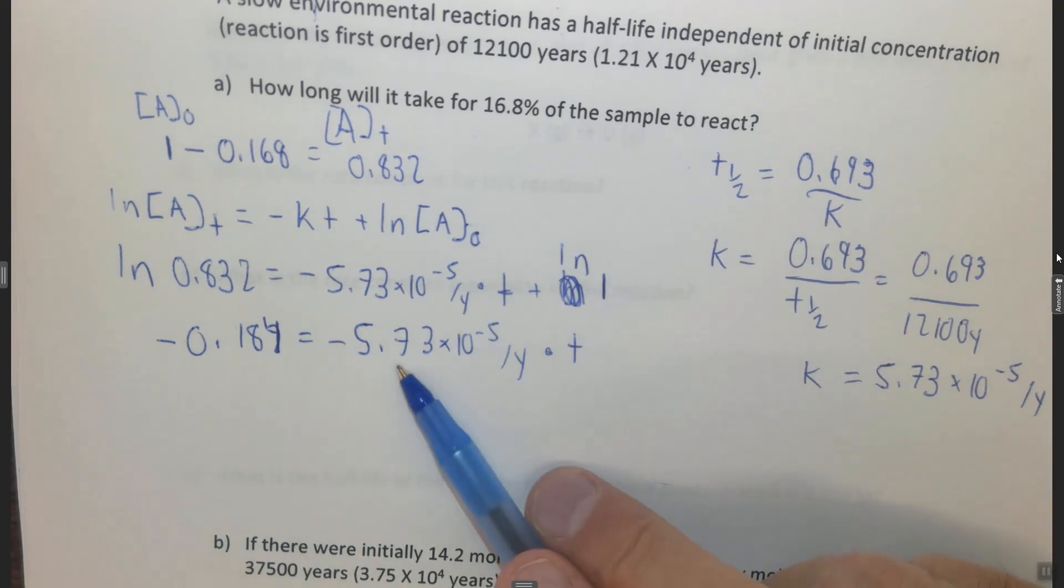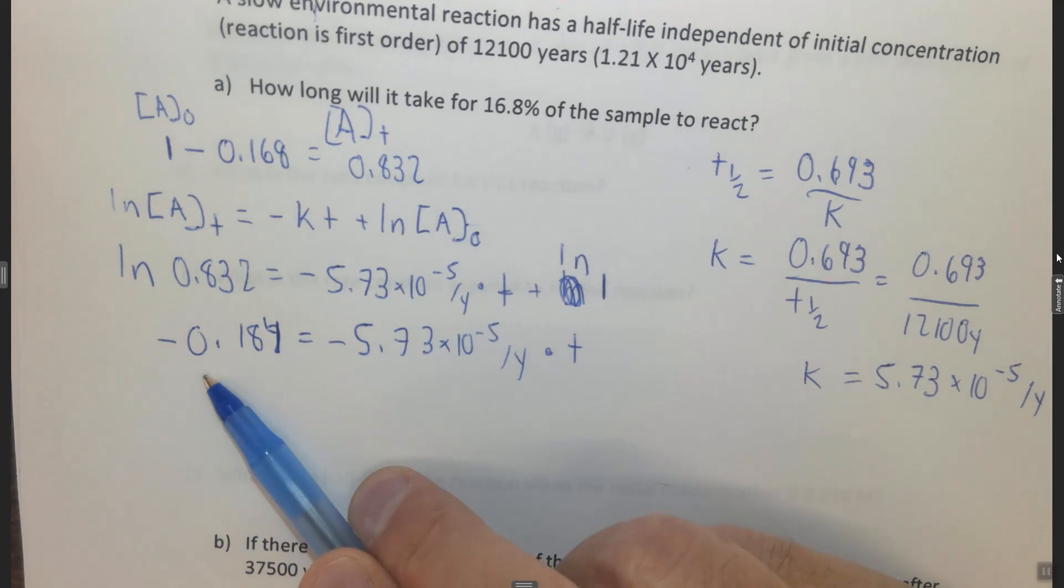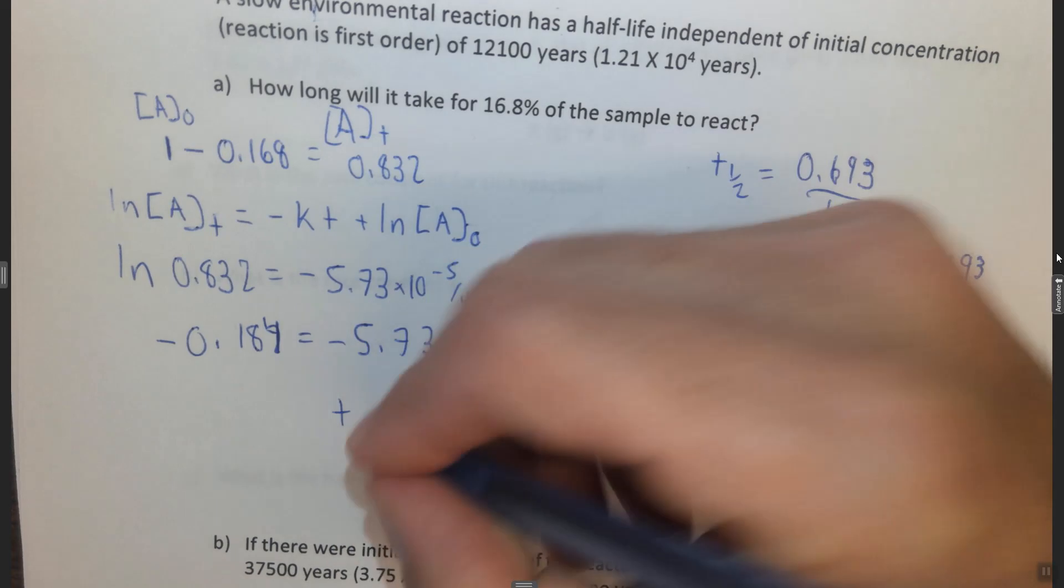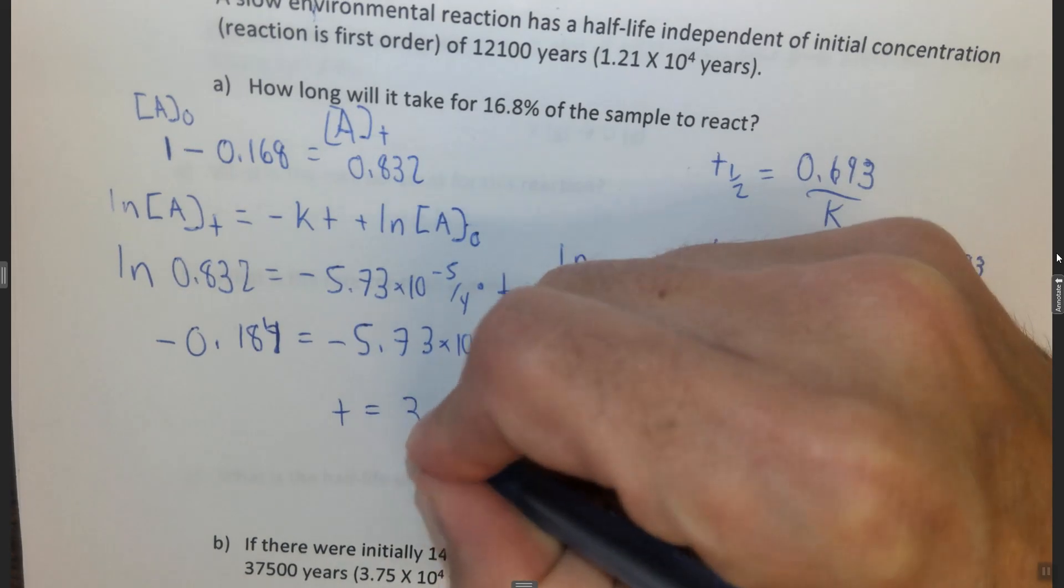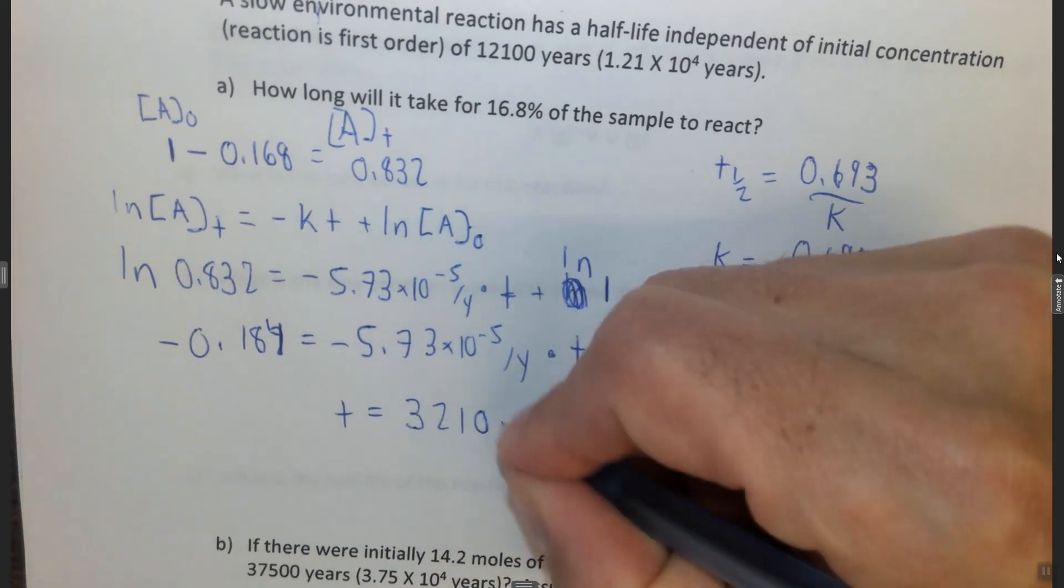Divide both sides by negative 5.73 times 10 to the minus 5, and you get that t is equal to 3,210 years.